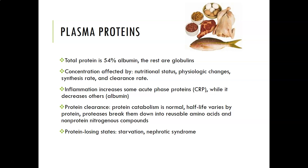Total protein is more than half albumin, and the rest consists of various globulins. The concentration is affected by nutritional status, physiological changes, synthesis rate, and clearance rate. Inflammation increases some acute phase proteins — acute phase reactants such as CRP — while decreasing others such as albumin, which affects the overall protein composition.